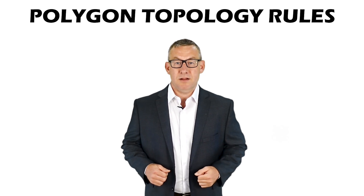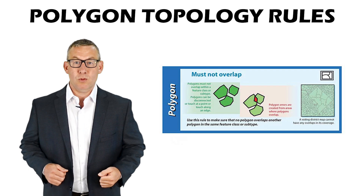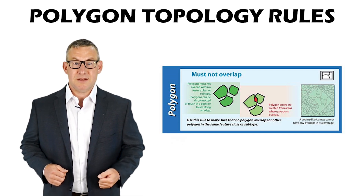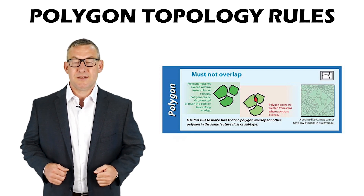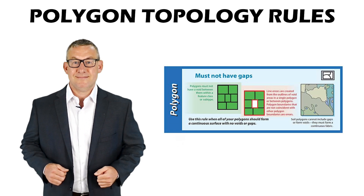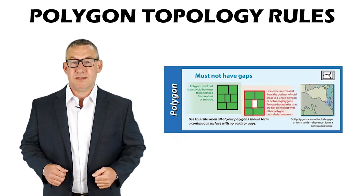Polygon topology rules include: Must Not Overlap — polygons must not overlap within a feature class, but polygons can touch at a point or along the edge. Must Not Have Gaps — polygons must not have a void between them in a feature class.